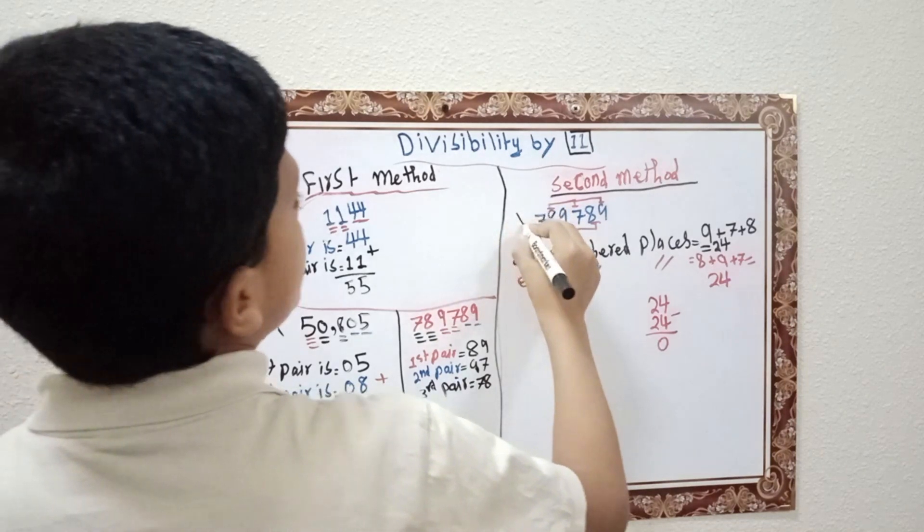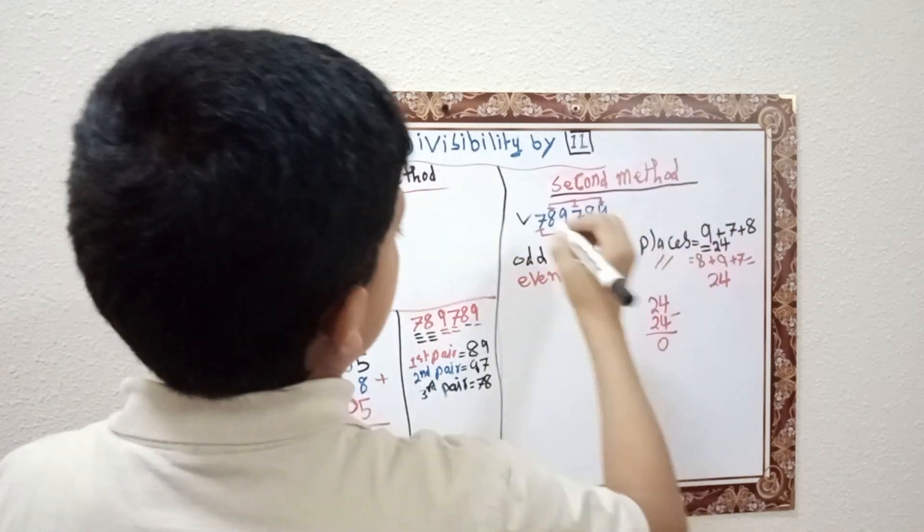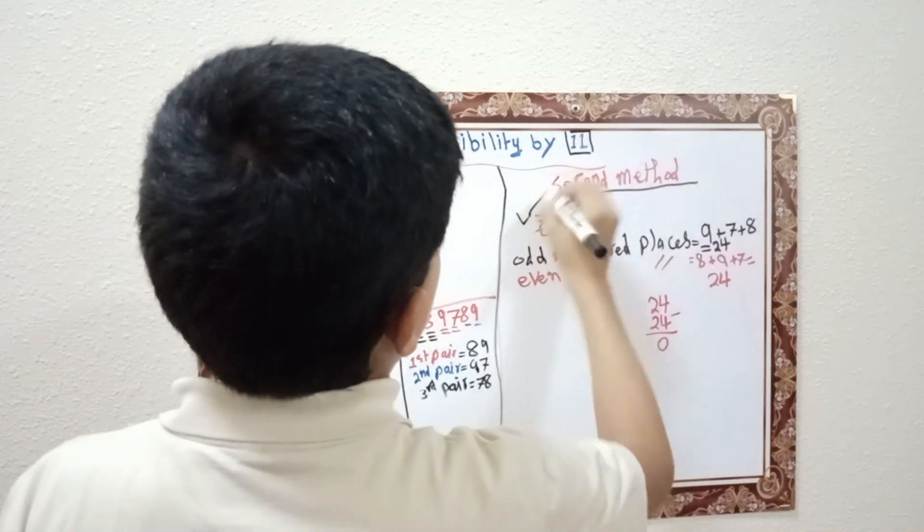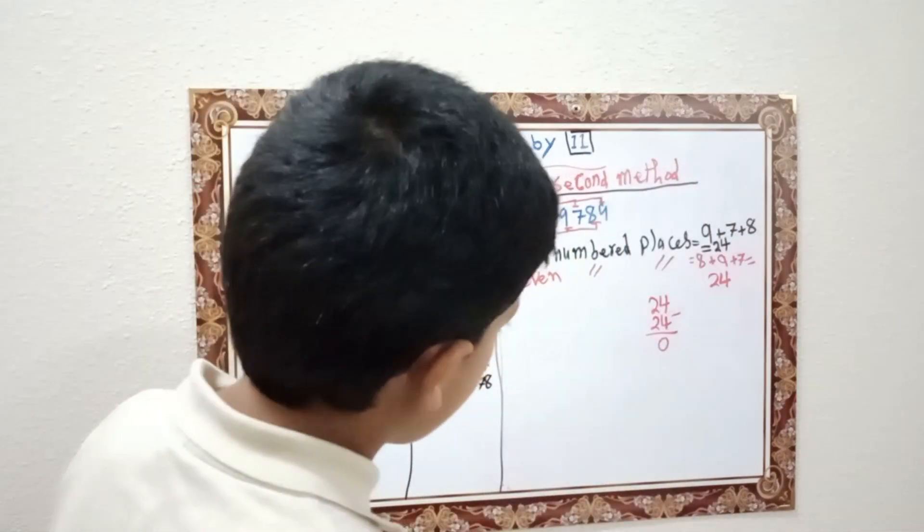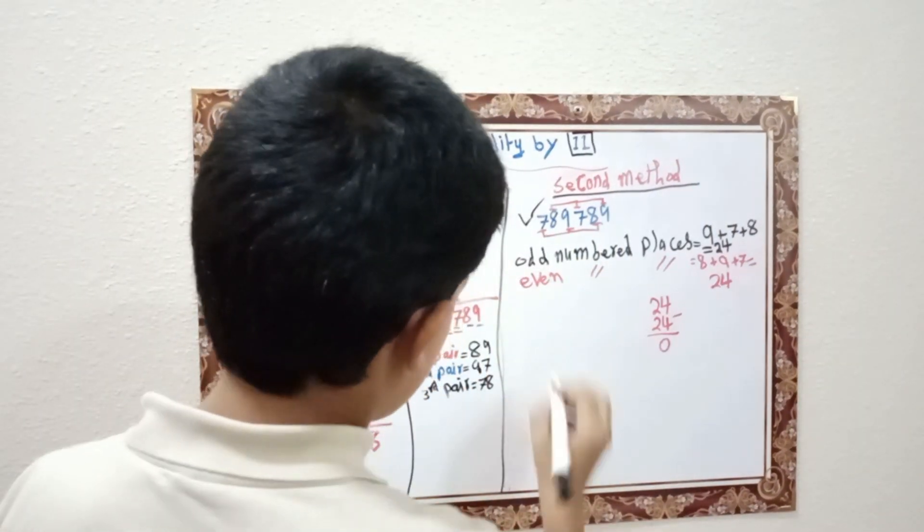So this number can be divisible by 11. Sorry — by 11.